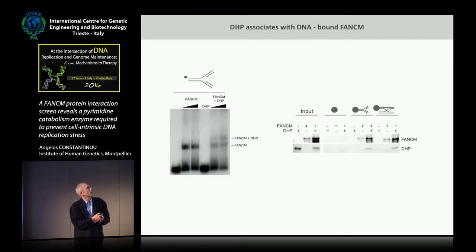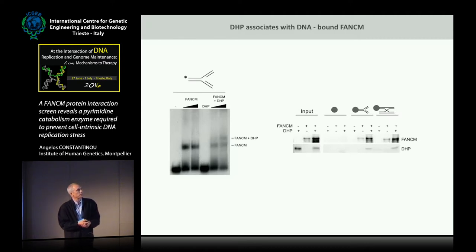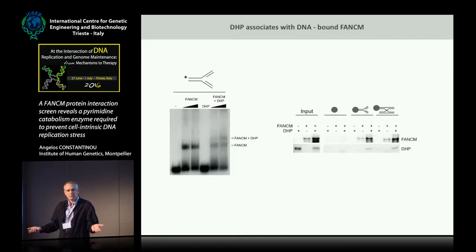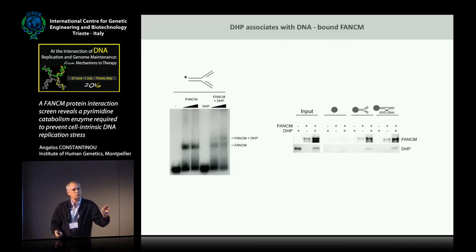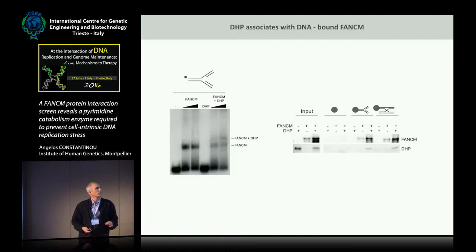Consistent with this, if you label the 5' end of the substrate with biotin, you can pull it down with streptavidin beads, and we pull down DHP with the substrate only when it was co-incubated with FANCM, but not alone. DHP had absolutely no impact on the biochemical branch migration activity of FANCM. So if this association serves any function, the only one I can propose is that FANCM recruits a subfraction of DHP to chromatin—but this could be important, as you will see.